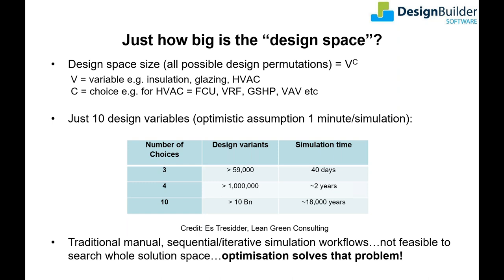For each variable you'll have a number of choices. For example in your HVAC system you may have identified fan coils, VAV systems with traditional boilers and chillers, VRF, or ground source heat pump — that's four HVAC system choices. If we include a total of 10 design variables with only four choices each, the table shows that results in over a million possible design permutations. Manually assessing even just one relationship between a small number of design variables takes a huge amount of time. This is why design teams have previously been forced to resort to what works based on past experience and rules of thumb. The answer to this problem is design optimization.